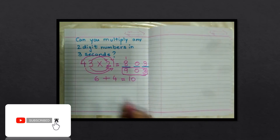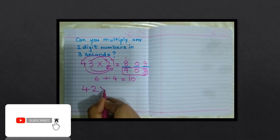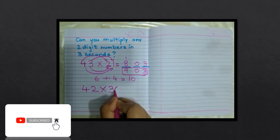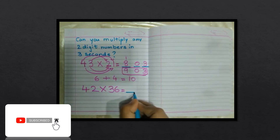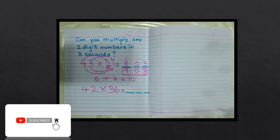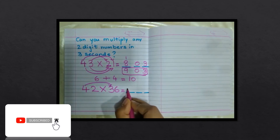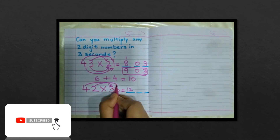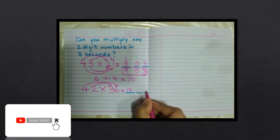Let's take the next question: 42 multiplied by 36. You have three places. First, four multiplied by three is twelve, and two multiplied by six is twelve. You cannot write a two-digit number, so write two and carry over one.